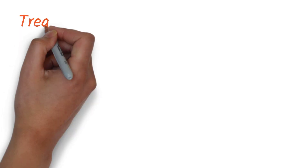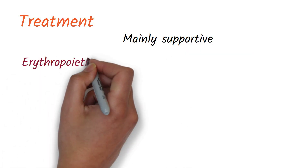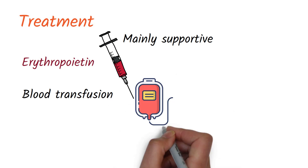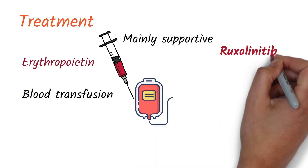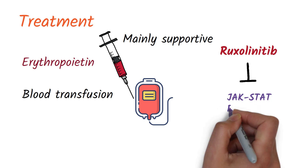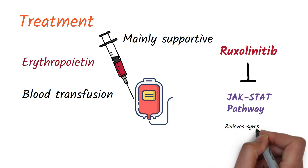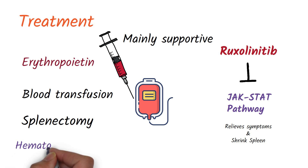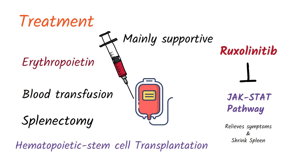The treatment of myelofibrosis is mostly supportive. Erythropoietin can be given for anemia and blood transfusion for pancytopenia. A drug called ruxolitinib can also be given — it inhibits the JAK-STAT pathway, relieving symptoms and reducing the size of the spleen. In patients with a very large and painful spleen, a splenectomy can be done. Additionally, hematopoietic stem cell transplantation can be performed and can potentially cure myelofibrosis in some patients.